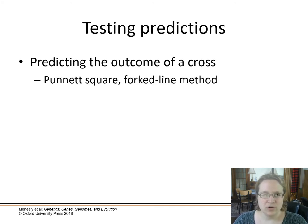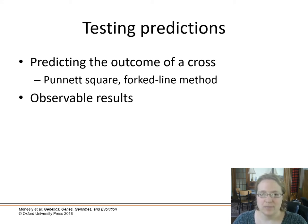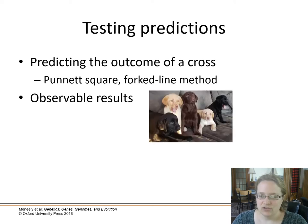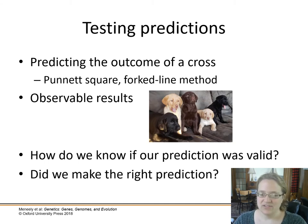We use either a simple Punnett square or the fork-line method for more complicated crosses. Then we get our observable results, which are going to be counts — like how many offspring, how many flies, how many baby chickens, how many adorable Labrador puppies. Once we compare these, how do we know our prediction is valid? What are we actually testing against?